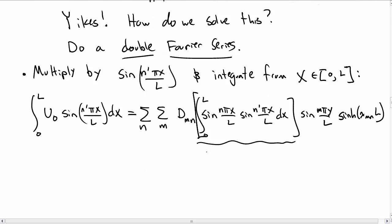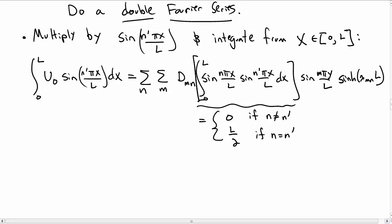We know how to do these integrals. This integral on the right hand side, well it's zero if n is not equal to n', and if they are equal you get L/2. That's awesome, that's really useful. That'll collapse down our sum in the n direction.